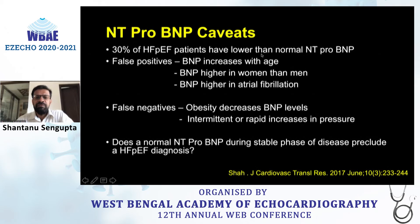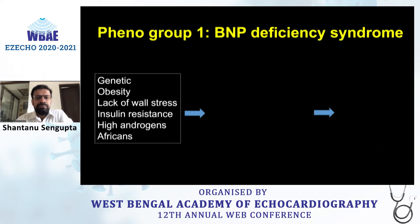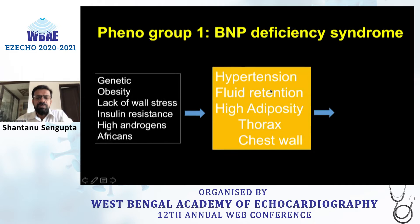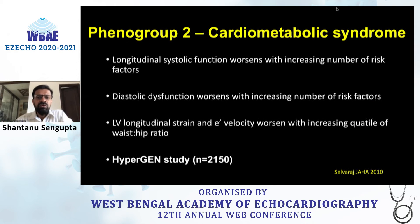BNP has important caveats: 30% of HFpEF patients can have low-normal BNP. False positives occur with age and in women, who have higher BNP. BNP can be elevated in atrial fibrillation, while obesity decreases BNP — a key false negative. There can also be rapid changes in BNP with pressure changes. Phenotype 1, the BNP-deficiency syndrome, is characterized by lack of LV wall stress. These patients are genetically obese, have high androgen levels — also seen in Africans — predisposing them to hypertension, fluid retention, high adiposity, and a fallen thorax phenotype with minimal cardiac involvement but a better prognosis.